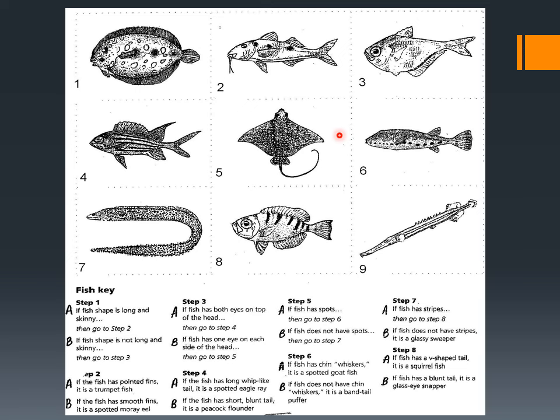Let's pick one of these fish to key out. You can pick any fish — you don't have to go in order. Let's pick this cool-looking one in the middle. Remember, we're always going to start at step one. It says if the fish shape is long and skinny — no, not so much. The second choice is if the fish shape is not long and skinny. I'd say not long and skinny for number five in the middle, so go to step three.